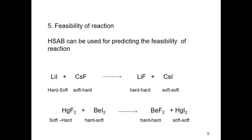Another application is to predict the feasibility of a reaction. When lithium iodide and cesium fluoride are mixed, lithium fluoride and cesium iodide are obtained immediately, because in lithium fluoride there is a hard–hard interaction, and in cesium iodide there is a soft–soft interaction, which is more stable than lithium iodide and cesium fluoride.